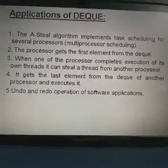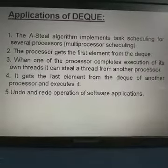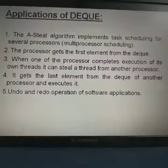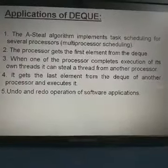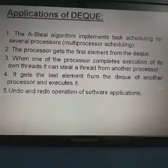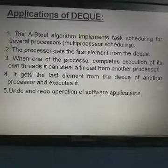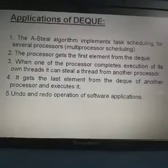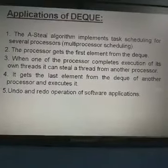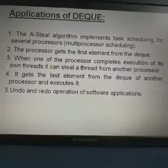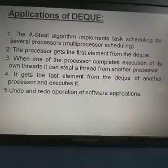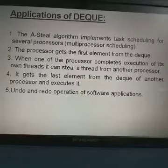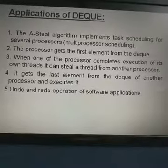Next are the applications of DQ. A work-stealing algorithm implements task scheduling for several processors, or multi-processor scheduling, using DQ. The processor gets the first element from the queue. When one of the processors completes the execution of its own threads, it can steal a thread from another processor. This is the DQ-based work-stealing algorithm used for scheduling purposes, where we use a number of processors to process and execute tasks in a time-based manner.